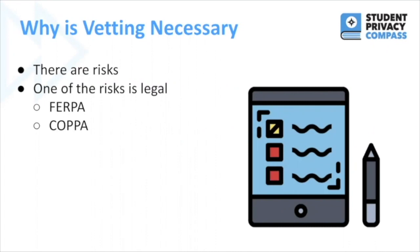We go through the different risks of student privacy in our module "Why Protect Student Privacy," listed in our resource section. One of those risks is legal — specifically FERPA, the Family Educational Rights and Privacy Act, and COPPA, the Children's Online Privacy Protection Rule. If these laws are violated, the school can face investigation or even loss of federal funding.